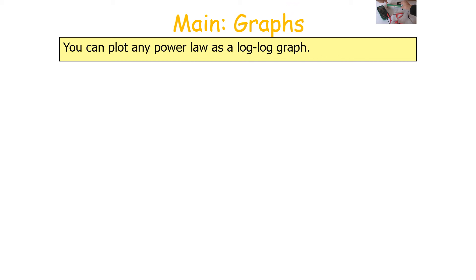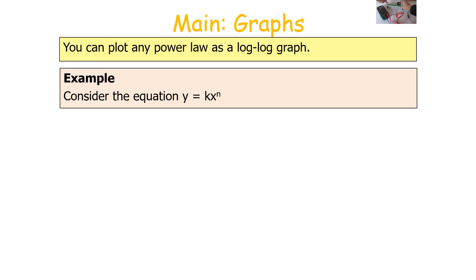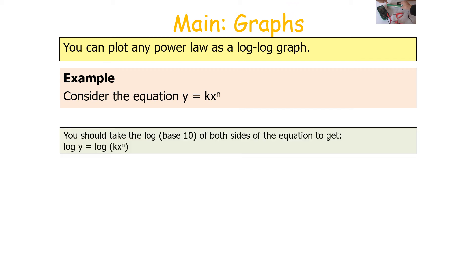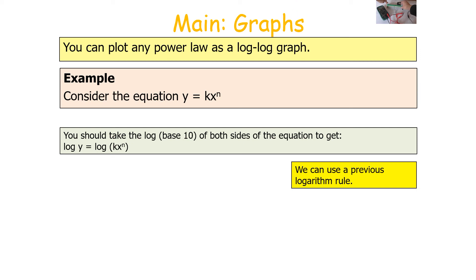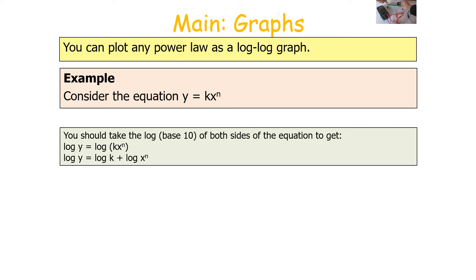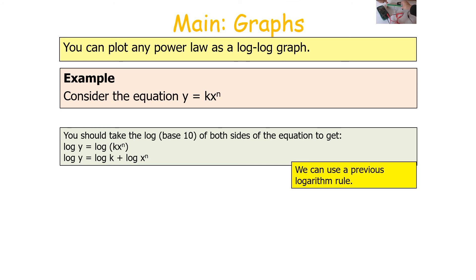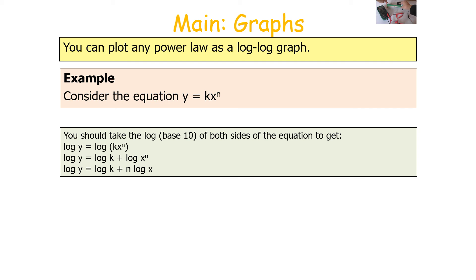You can also plot any power law as a log-log graph. Consider Y = K × X^N. Taking log base 10 of both sides — we use base 10 here because there's no E term — gives log Y = log(KX^N). Applying the multiplication rule: log Y = log K + log(X^N), and then the power rule gives log Y = log K + N log X.